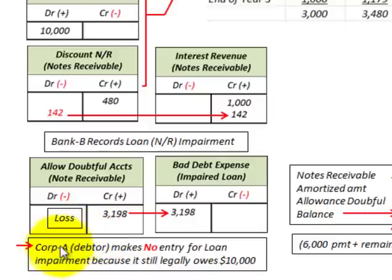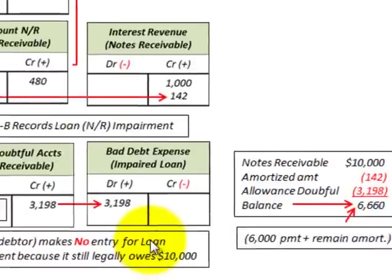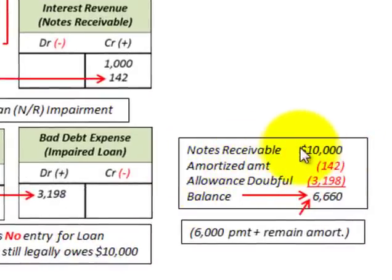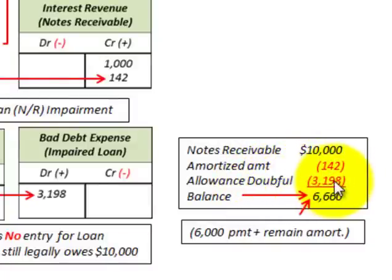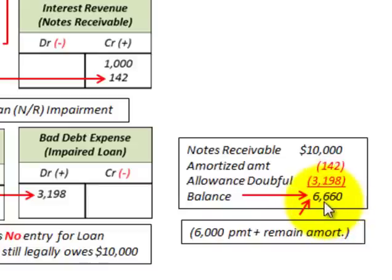For Corporation A, the debtor, they make no entry for the impairment because they are still legally owing $10,000 on this note — it would be a notes payable on their books. To summarize, for the notes receivable: we have the $10,000 face amount, amortized $142 for the first year, and recognized the allowance loss of $3,198. The difference gives us a balance of $6,660. We're going to receive the estimated $6,000 payment, and the remaining balance between the $6,000 payment and the $6,660 carrying amount will need to be further amortized.